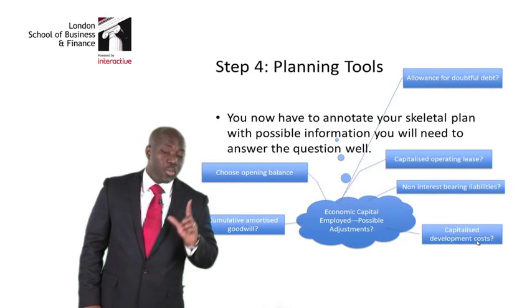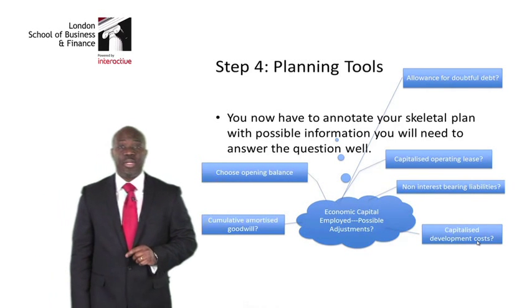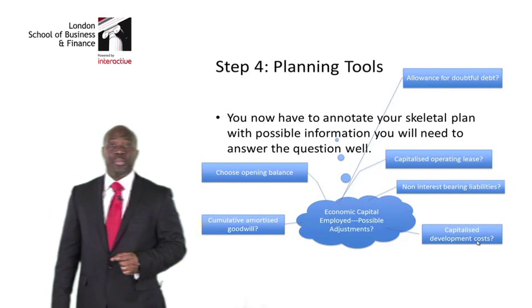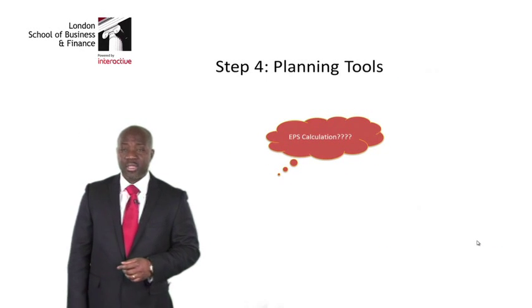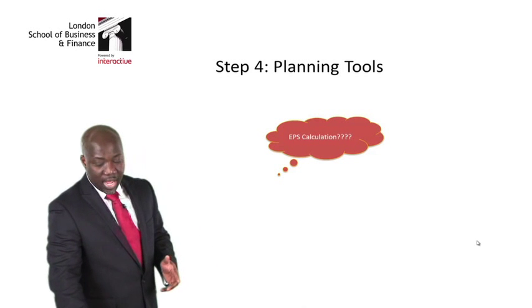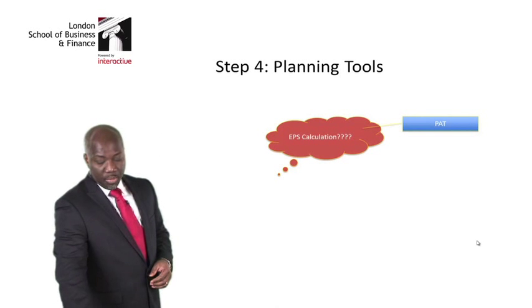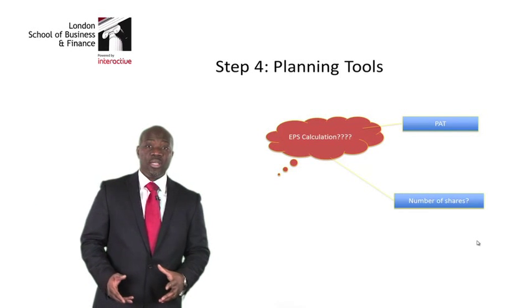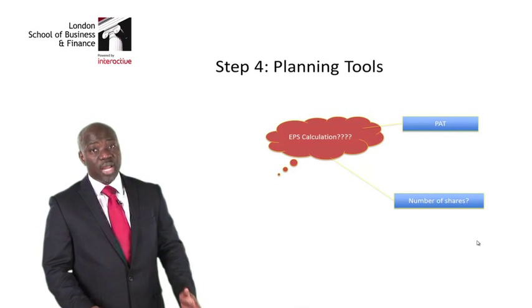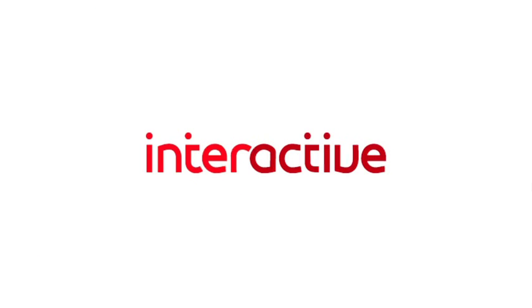So my first step was thinking about possible adjustments for NOPAT, and I've also covered the adjustments needed for economic capital employed. The second part of the question asks me to calculate EPS, for which I need profit after tax and the number of shares in the business. With this in mind, it makes it easy to attack the question and score more marks. Thank you.